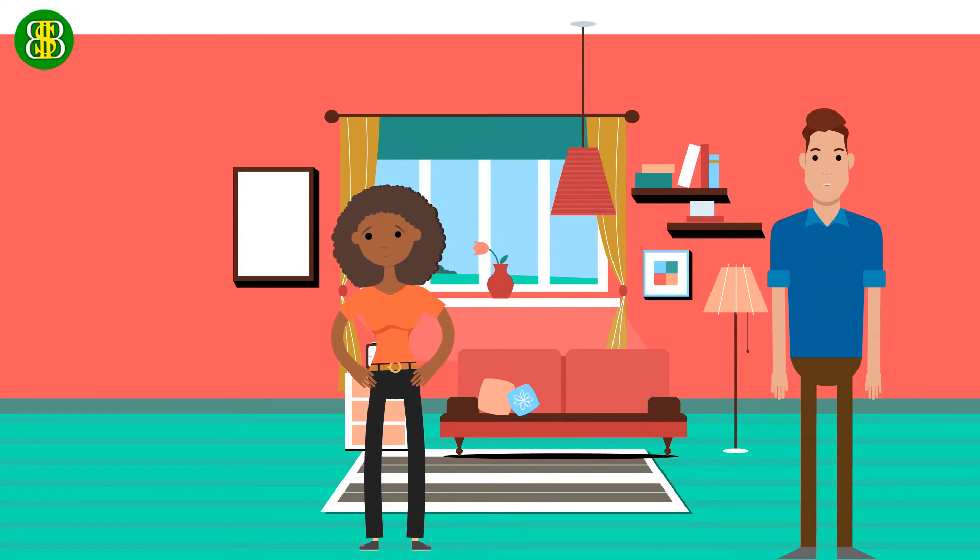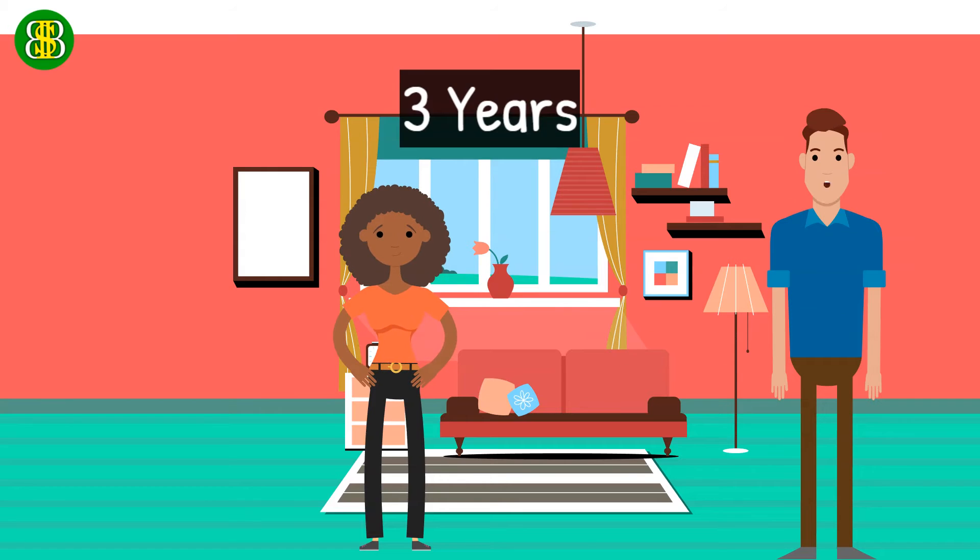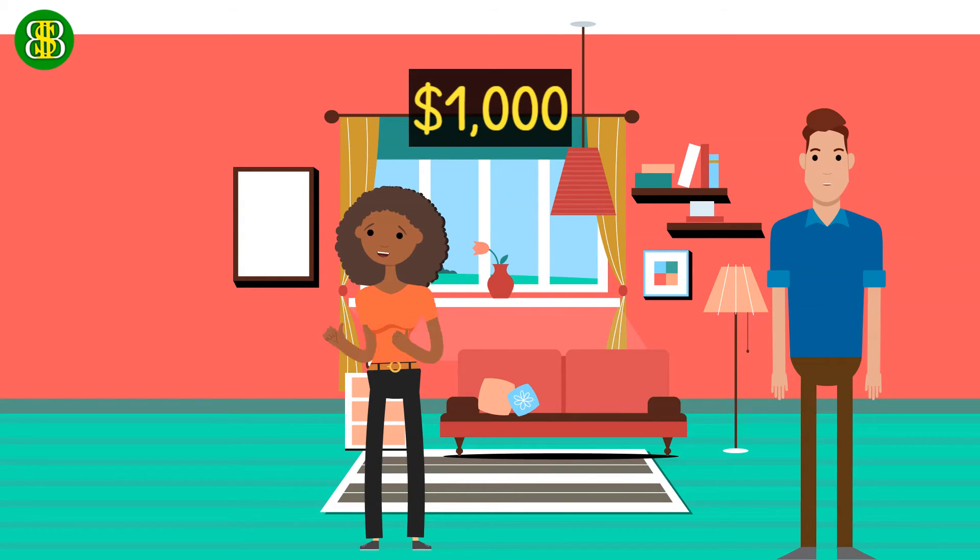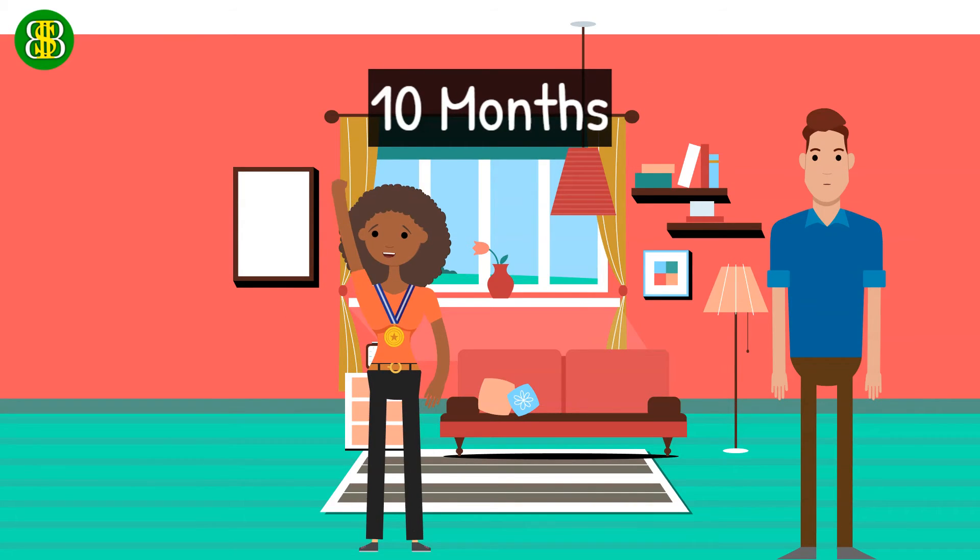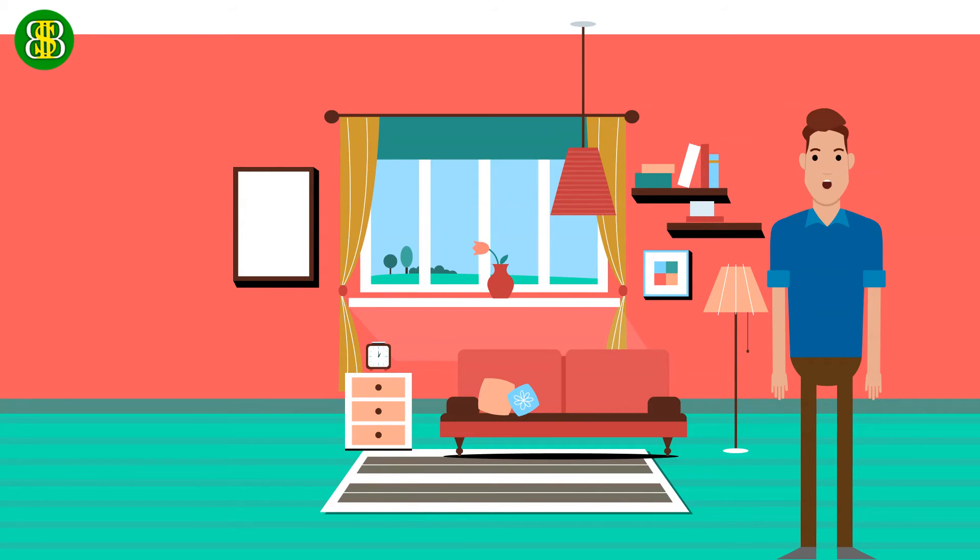She used to save only $300 a month and it would take her another three years before she achieves her goal. Now she sets aside $1,000 every month and it only took her 10 months to reach her $10,000 goal. From our example we can learn the importance of increasing our income so that we can save quickly.